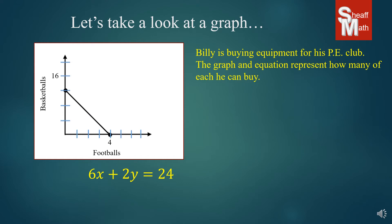Billy is buying equipment for his PE club. The graph and equation represent how many of each he can buy. So along that line you have all these different combinations of footballs and basketballs, and it probably fits into the money that he can spend. So what we're going to do first is look at the intercepts because those are important points.